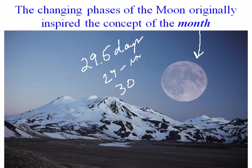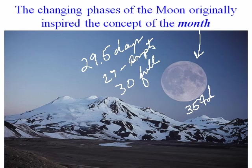The 29-day months were called empty months — like an empty cup — and the 30-day months were called full months. Originally our year was based upon 12 of those months, which turned out to be about 354 days. Many religious calendars are based upon this 354-day calendar based on 12 moon phases.